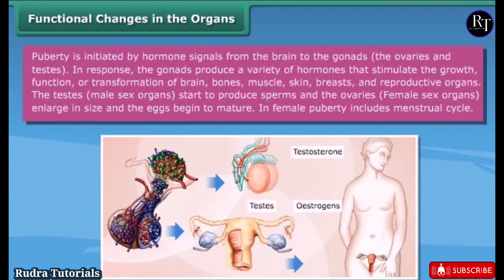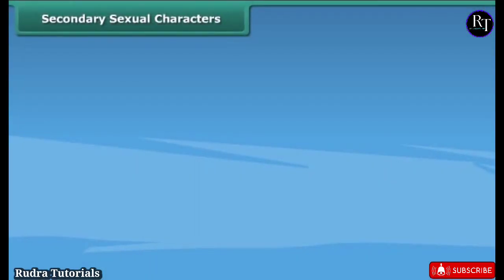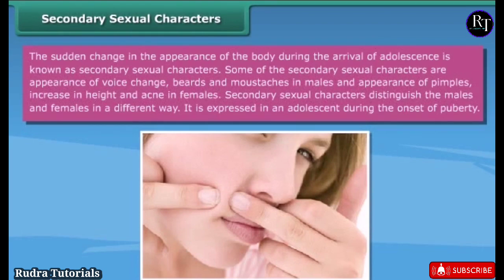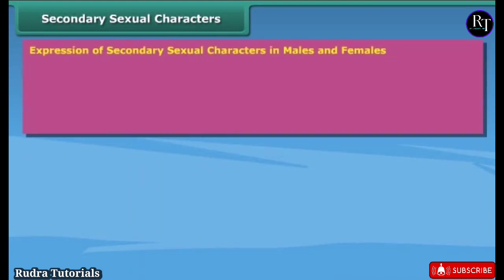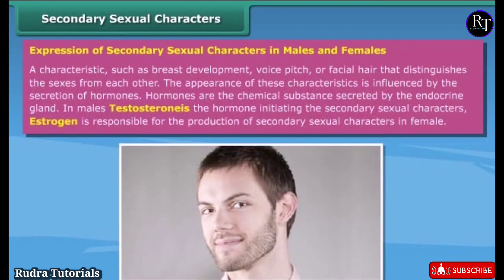Female puberty includes the menstrual cycle. Secondary sexual characters are the sudden changes in the appearance of the body during the arrival of adolescence. These include voice change, beards and mustaches in males, and pimples, increase in height, and acne in females. Secondary sexual characters distinguish males and females and are expressed during the onset of puberty. Characteristics such as breast development, voice pitch, or facial hair distinguish the sexes.